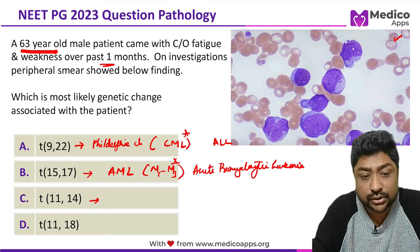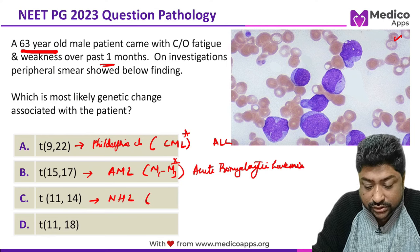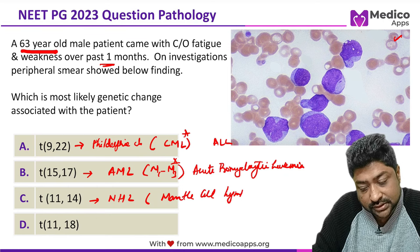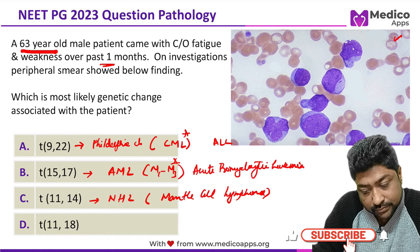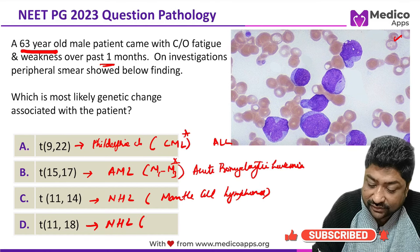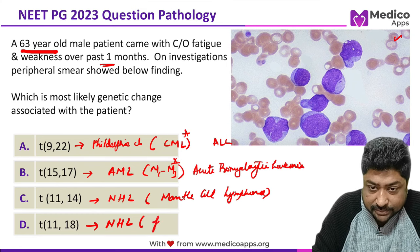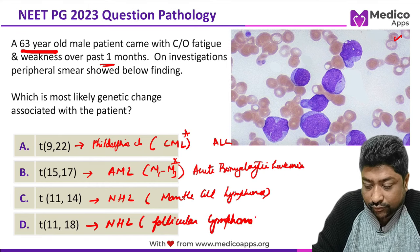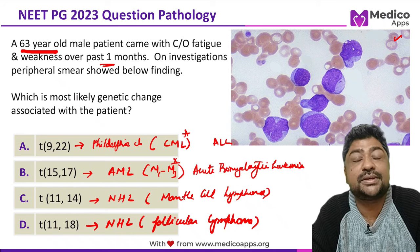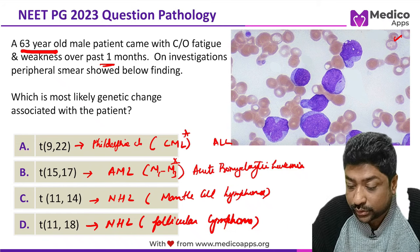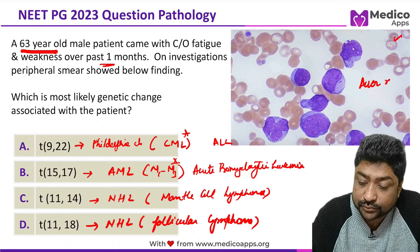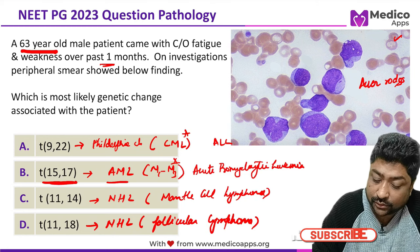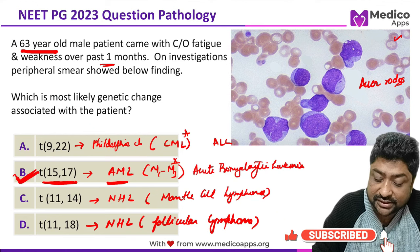Translocation 11;14 is seen in mantle cell lymphoma, a type of non-Hodgkin's lymphoma. Translocation 11;18 is seen in follicular lymphoma, another non-Hodgkin's lymphoma. The image shows Auer rods, primarily seen in AML, so T15;17 is the correct answer.